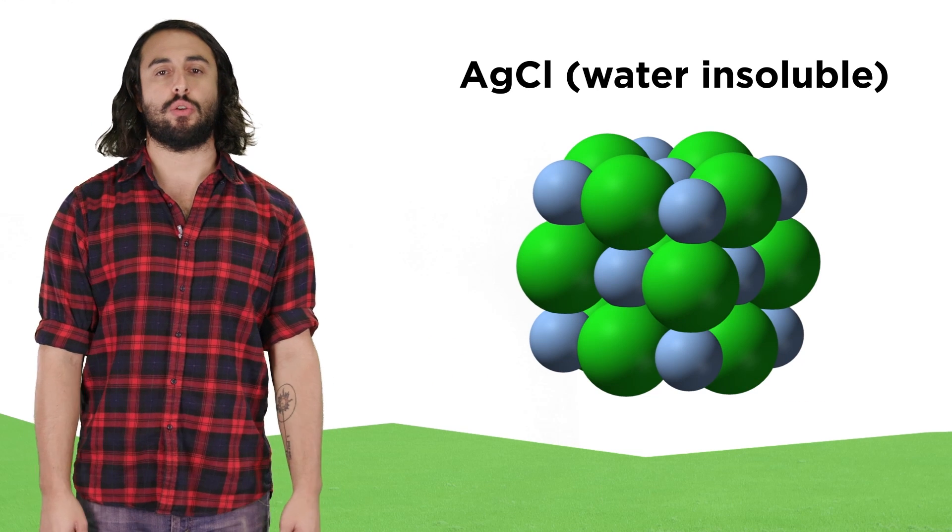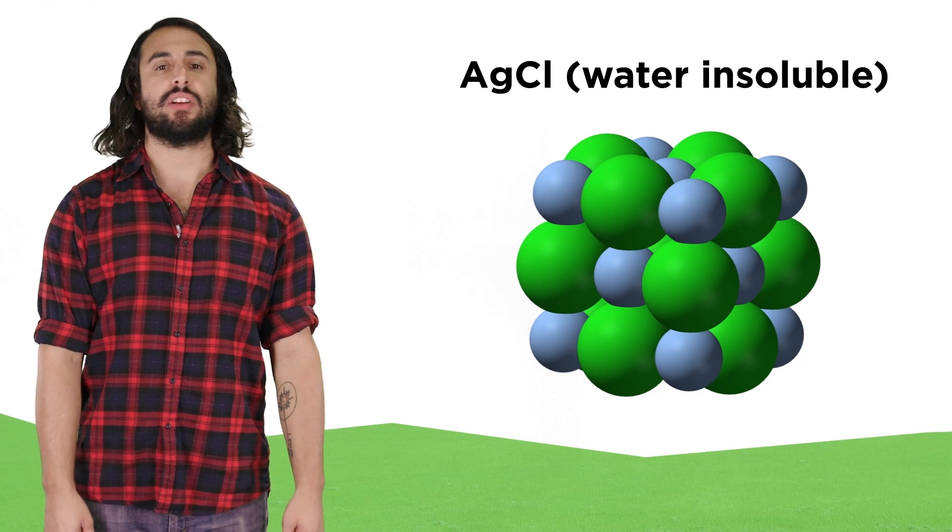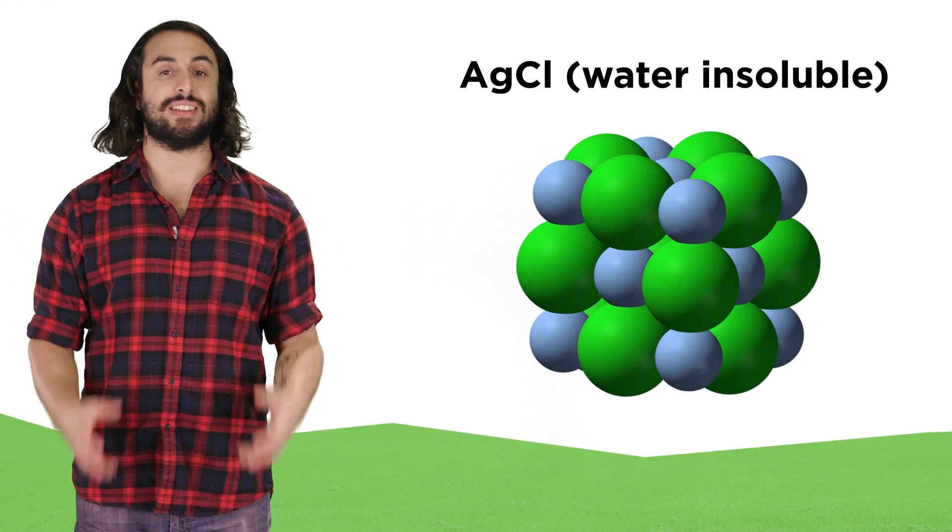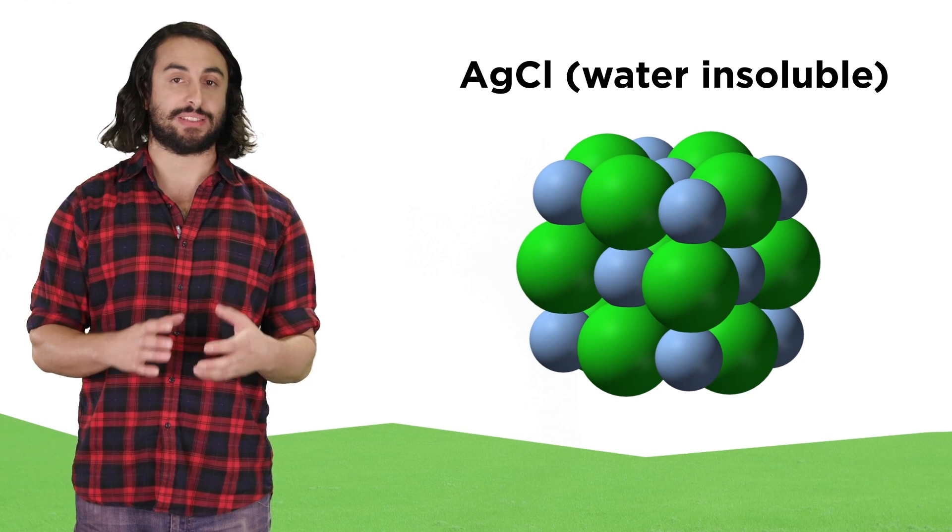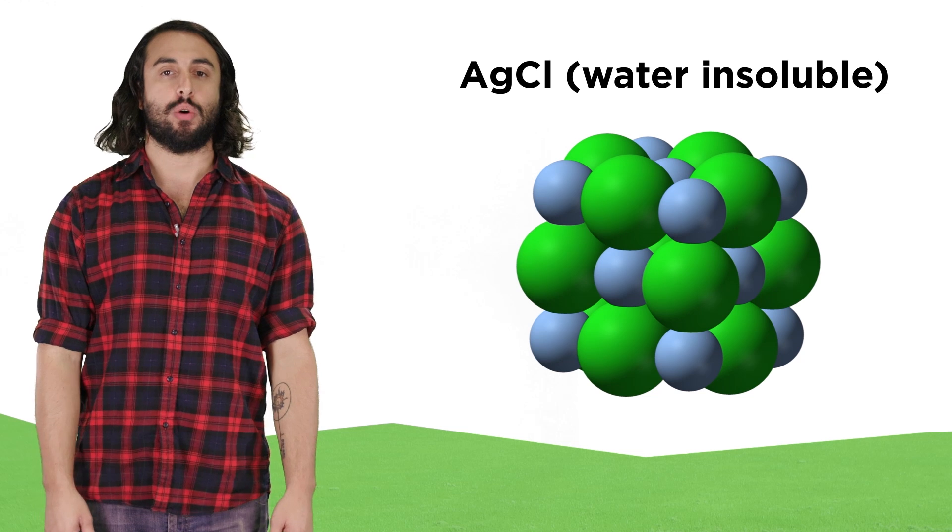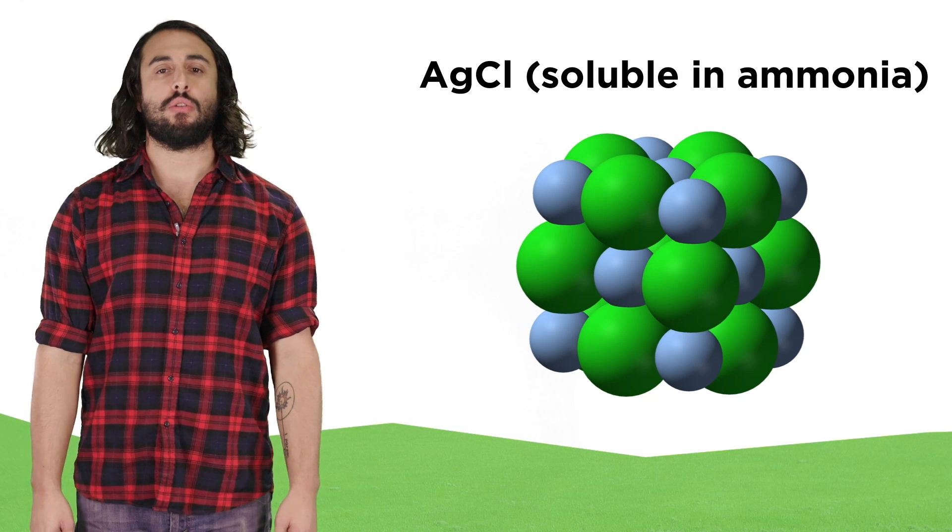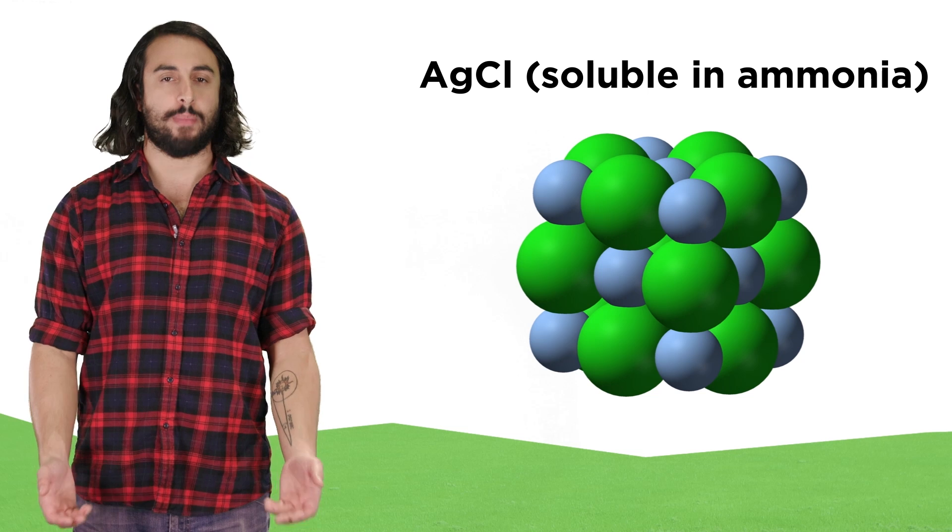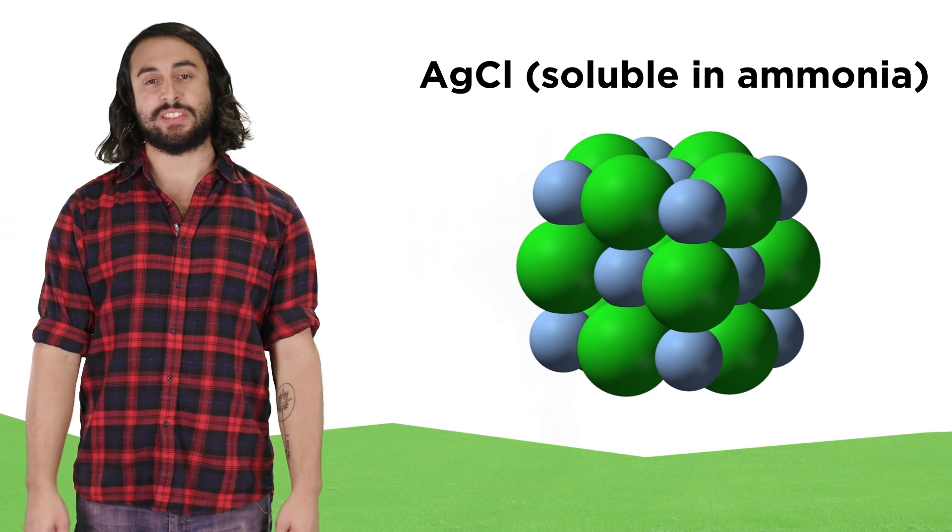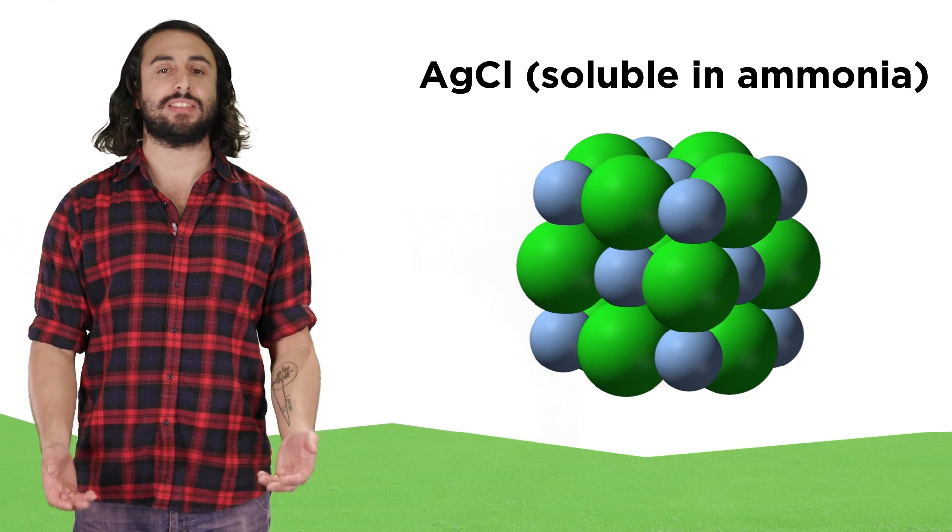For example, silver chloride is not water soluble because the lattice energy keeping these ions bound together in the solid phase is greater than the energy of solvation that will result if the ions break apart. However, silver chloride is somewhat soluble in ammonia because these substances can form a complex ion.